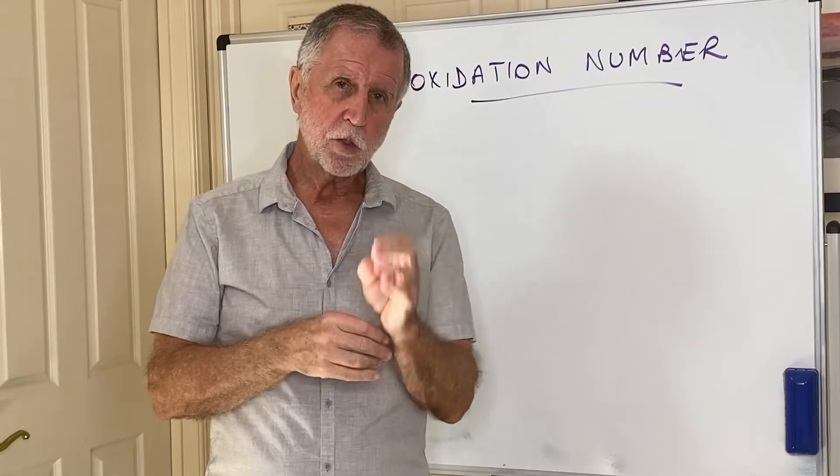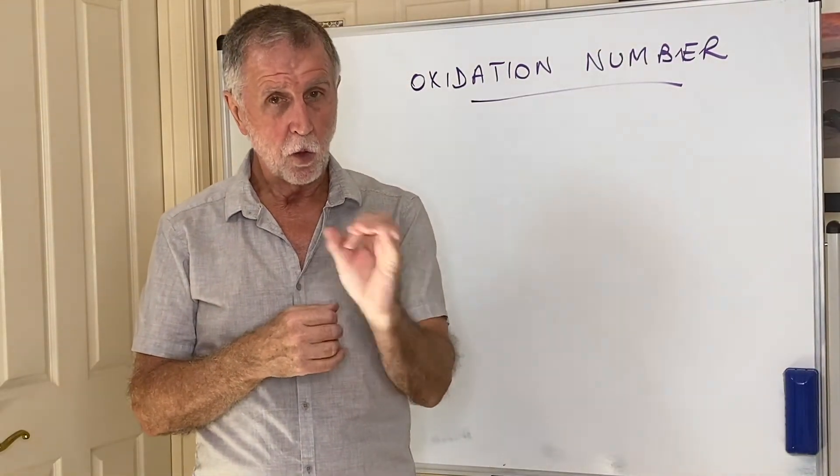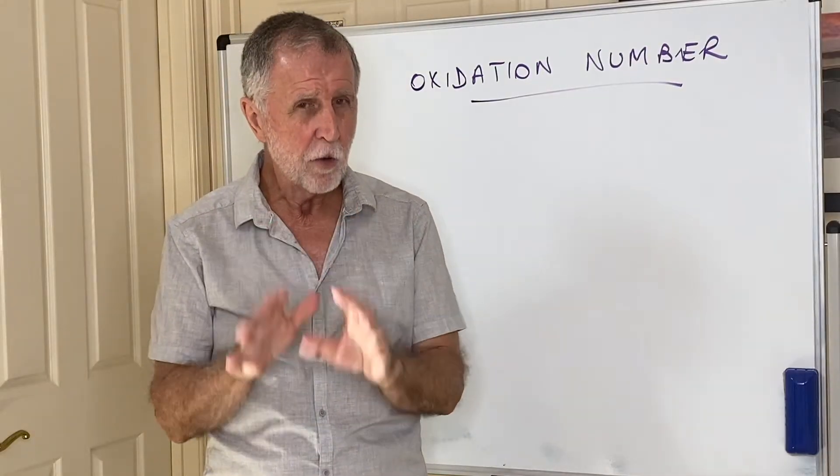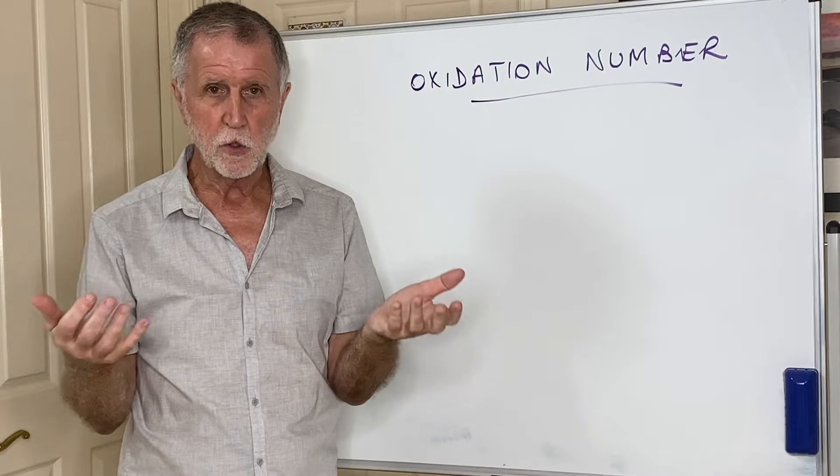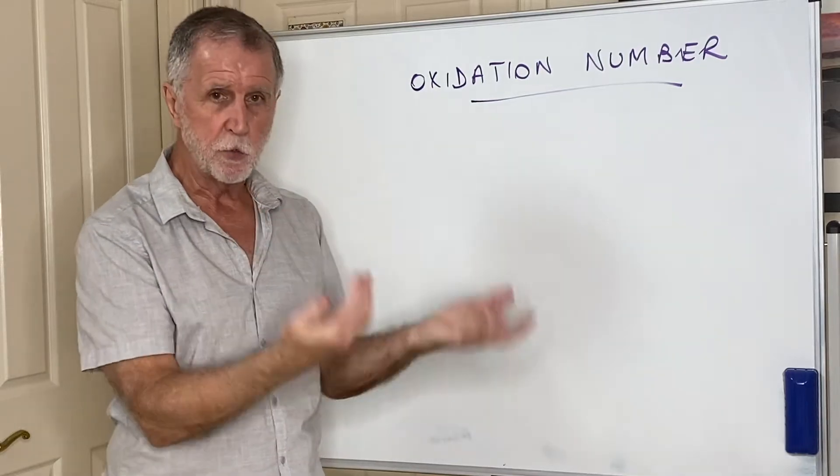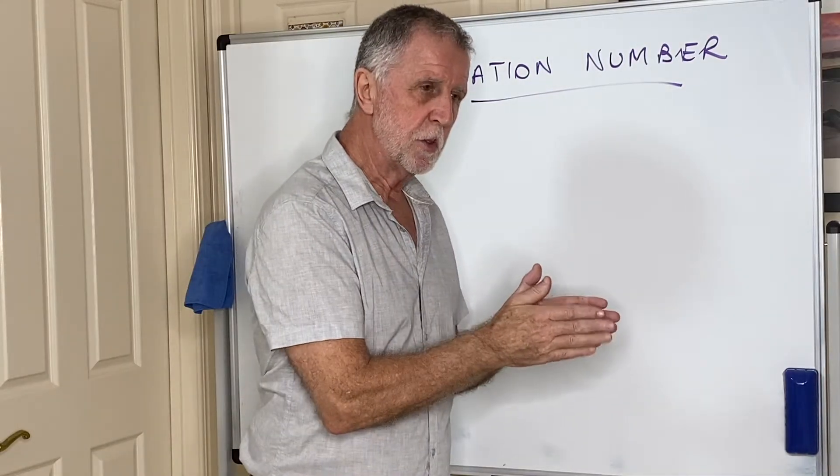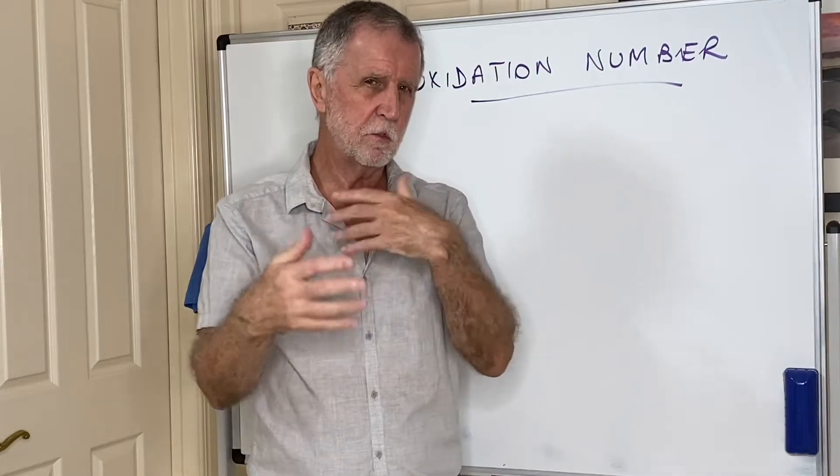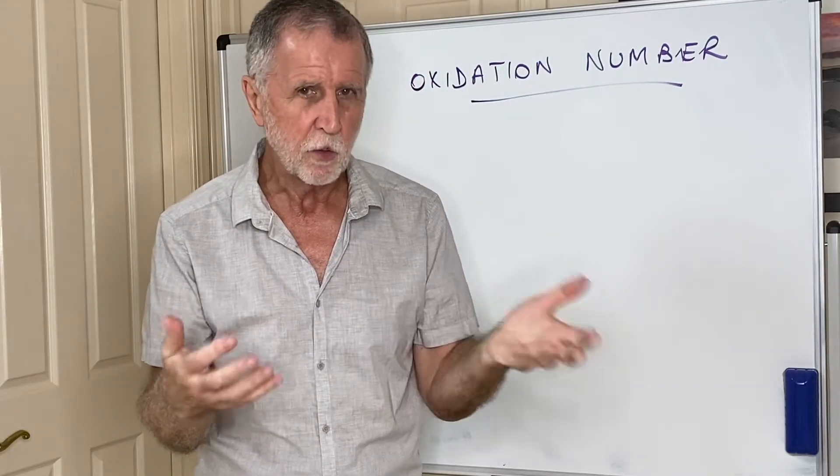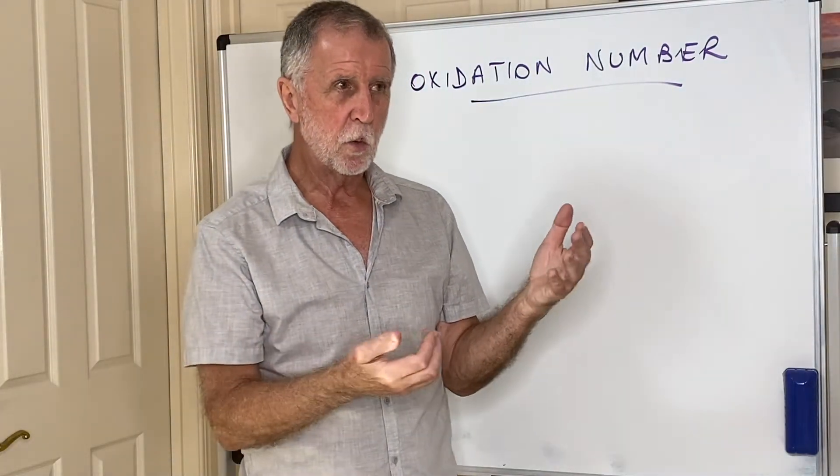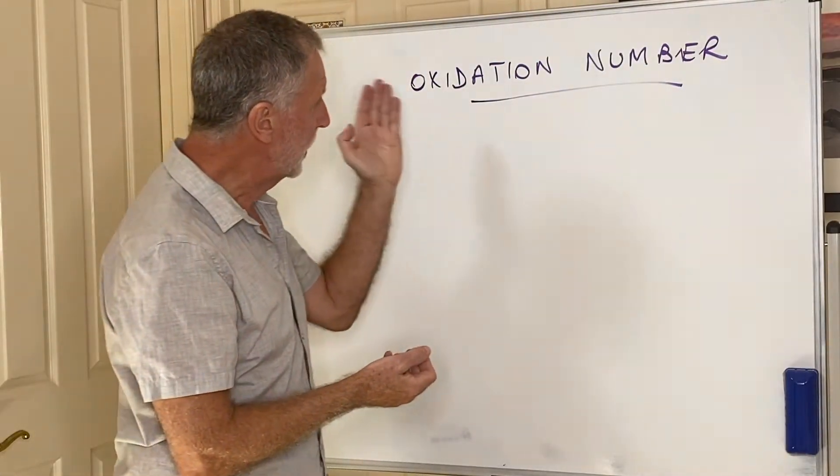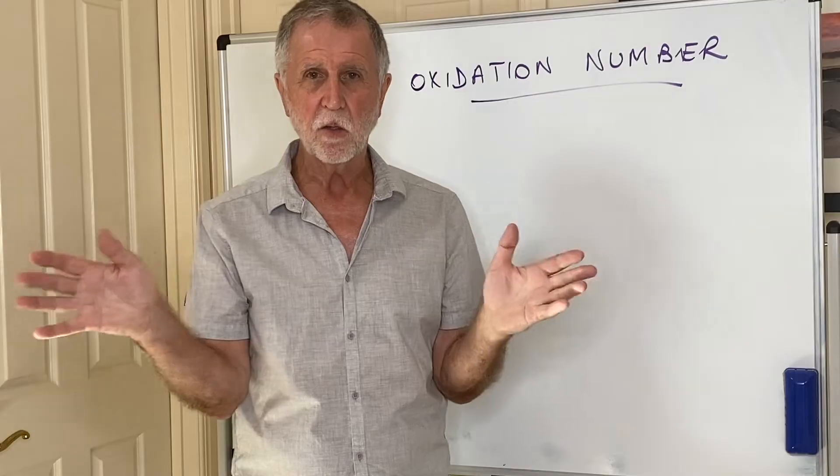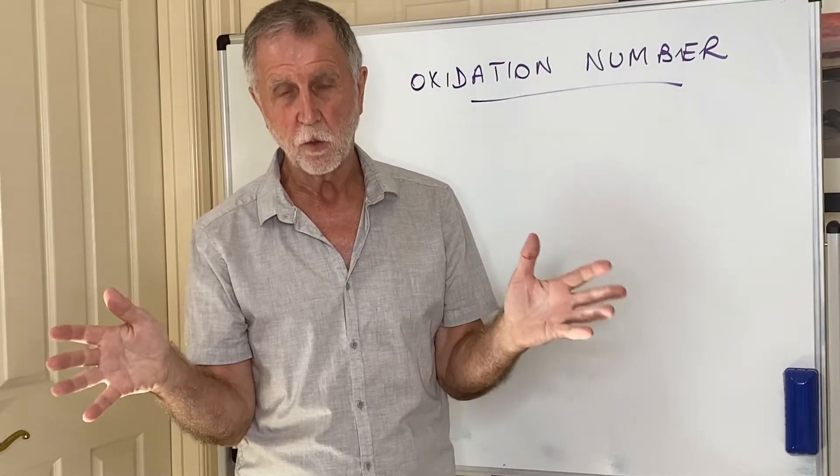If you can work out the oxidation number of an element in a compound, that can be very useful in predicting what's been oxidized, what's been reduced, which is the oxidizing agent, and which is the reducing agent. Some equations do not take place in ionic conditions, so you don't see electrons being gained or lost. But using this concept, you can work with anything covalent, basically.